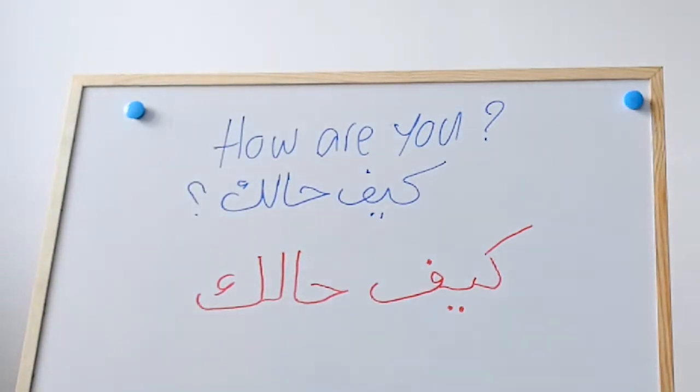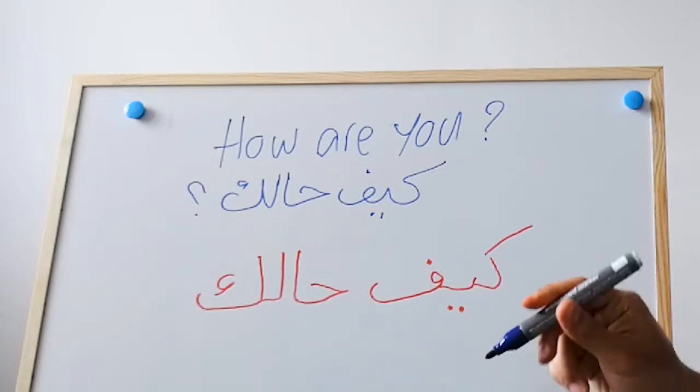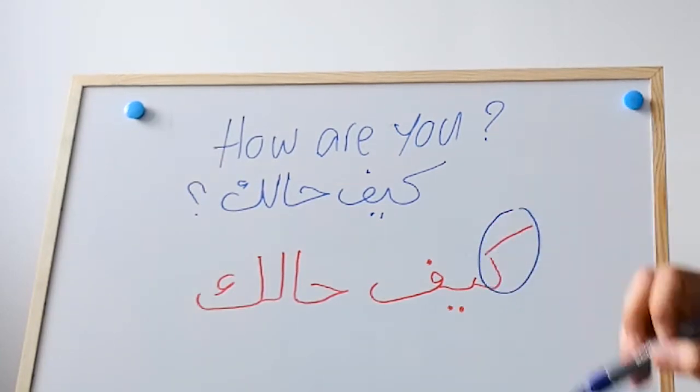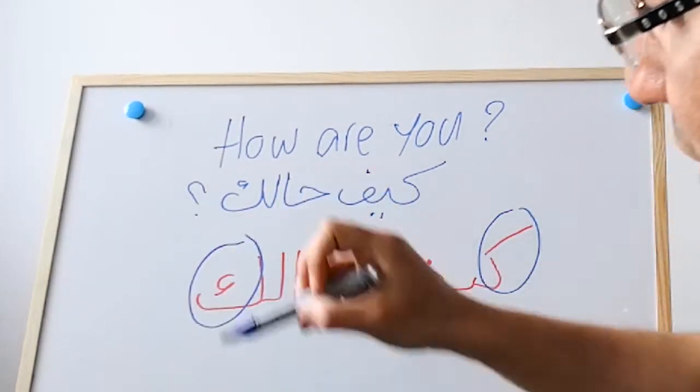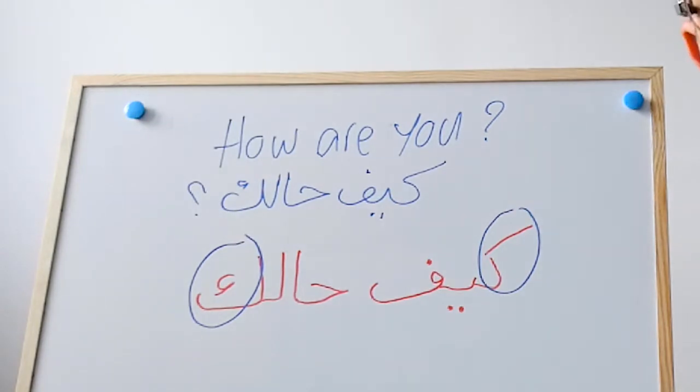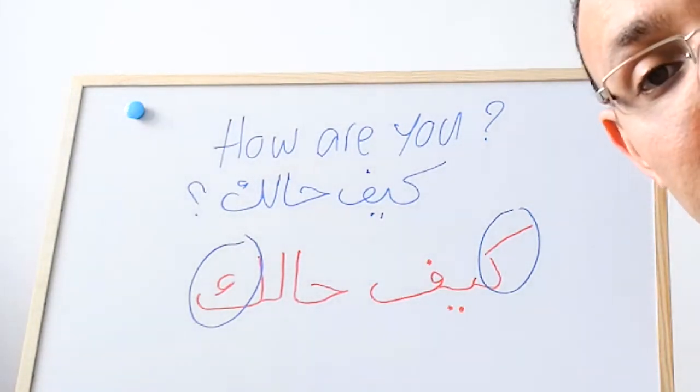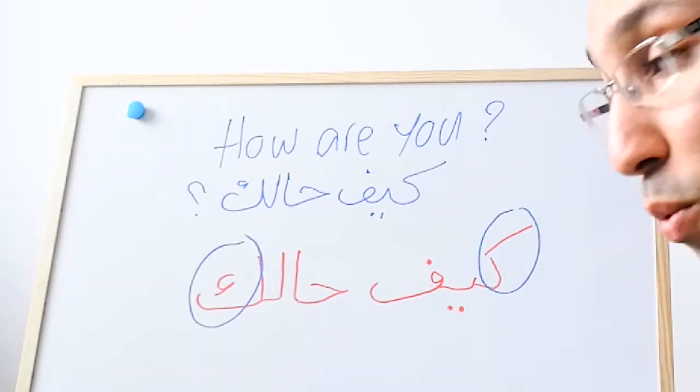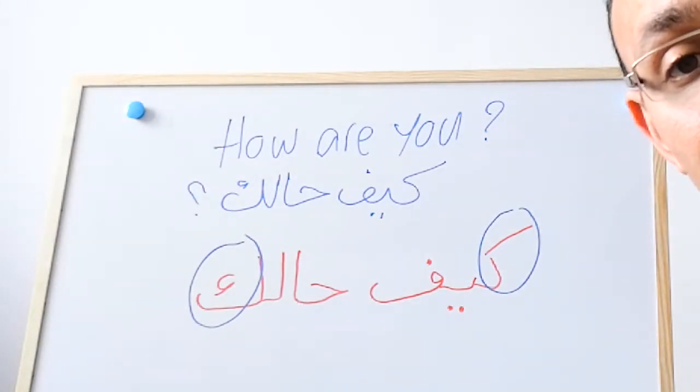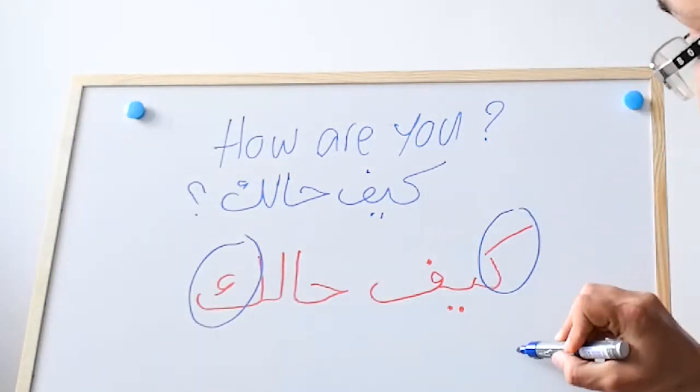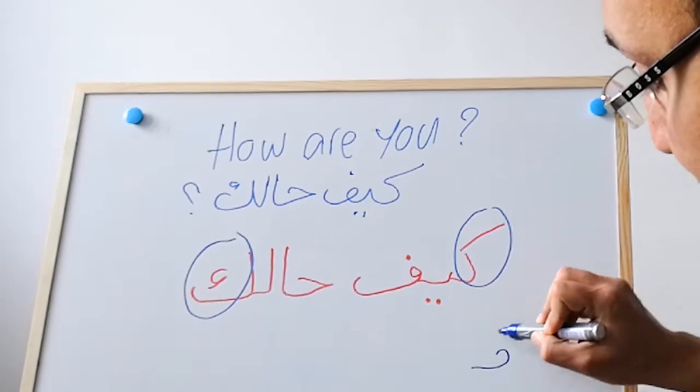Note that you can see here the caf - there are two types of the caf. This caf and this caf are different in shape because they are in different positions within the word. The caf that comes at the beginning of the word has a type like this - caf.